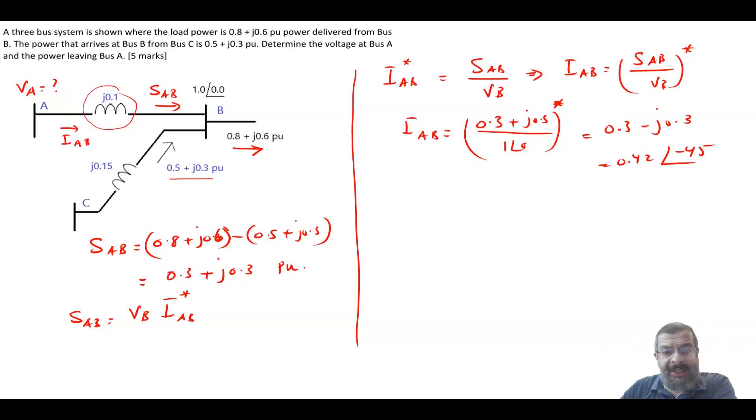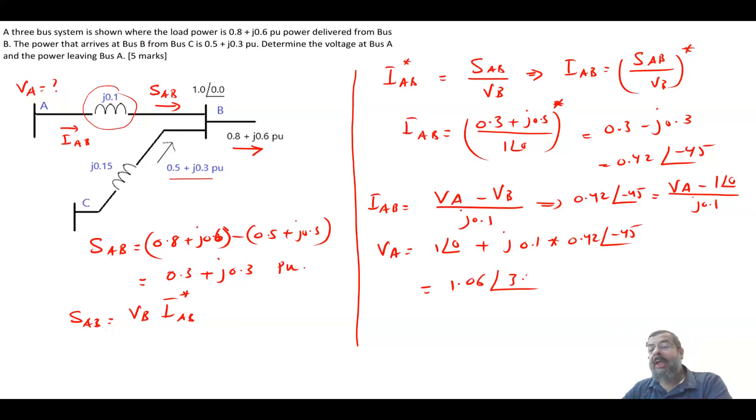So that is the current that enters bus B, but it's the same current that is leaving bus A because there is no shunt element. Now, this current IAB is equal to VA minus VB divided by the impedance between them, which is j0.1. We know everything except VA. So 0.42 angle of minus 45 is equal to VA minus one angle of zero divided by j0.1. So your VA is equal to one angle of zero plus j0.1 times 0.42 angle of minus 45. And this will give me a voltage equal to 1.06 angle of 3.24.